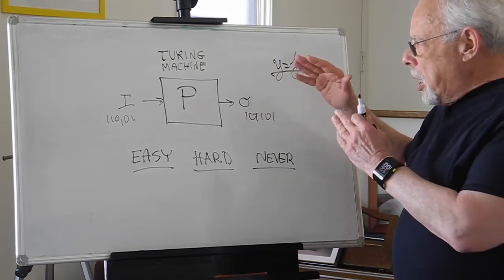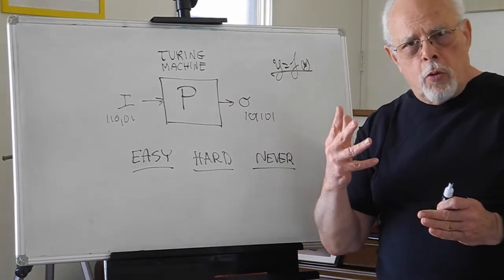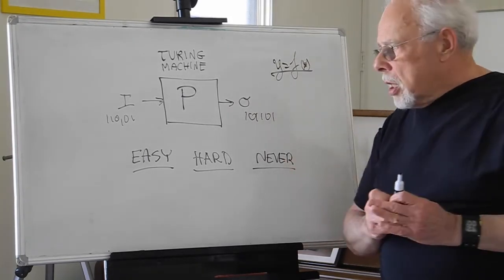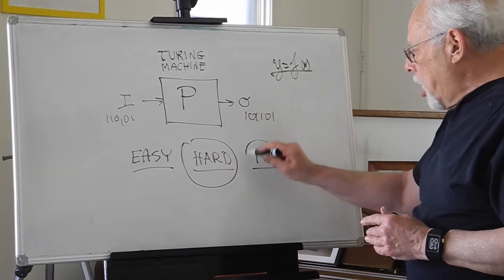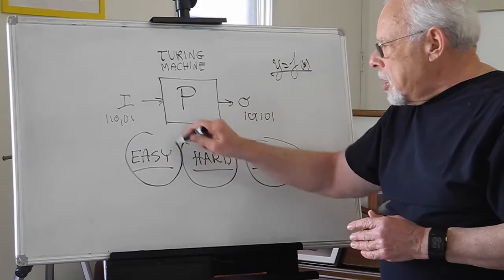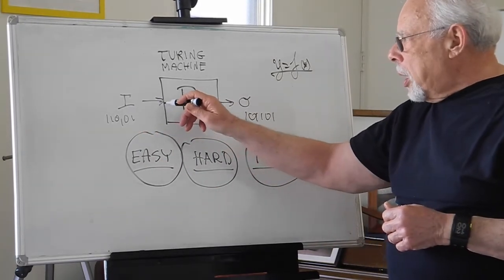What he then did was classify those machines into three categories: Easy, Hard, and Never. The easy machines are those that you have the input coming in, very quickly the output comes out.